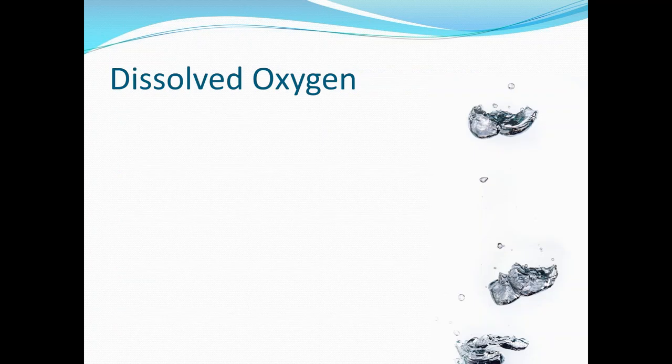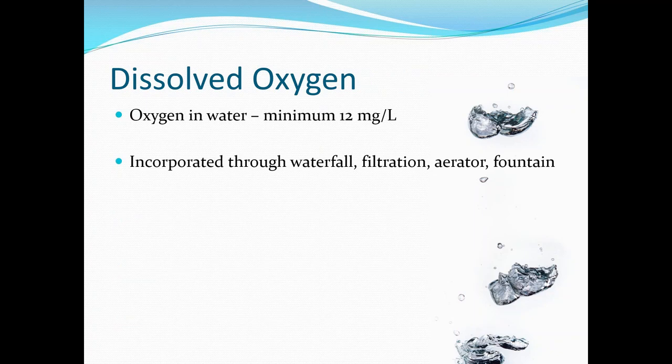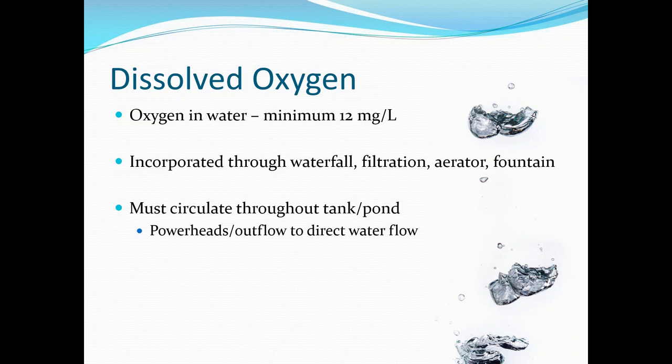Dissolved oxygen. Unfortunately, there are not many test kits that can test for dissolved oxygen; however, it's really easy to spot. You want a minimum of 12 milligrams per liter. This is usually incorporated through a waterfall, filtration, aerator, or fountain. You must circulate your oxygen throughout your tank or pond using powerheads and outflow — you really want to make sure there are essentially no dead spots in your water. Areas with no water flow can actually deplete all the oxygen, especially in outdoor ponds with algae, and a fish swimming through that dead spot can die from the lack of oxygen.